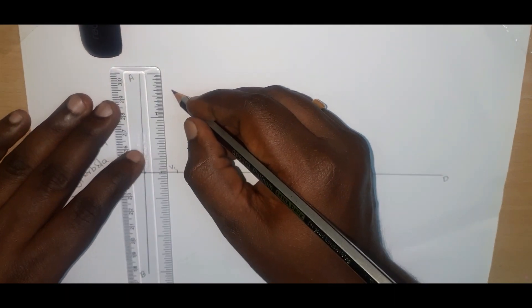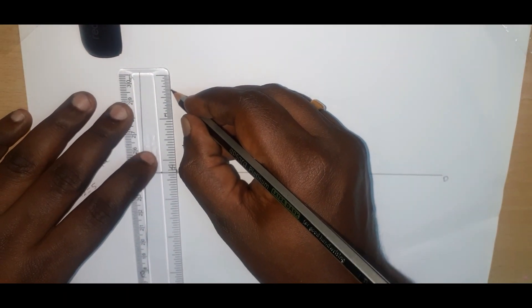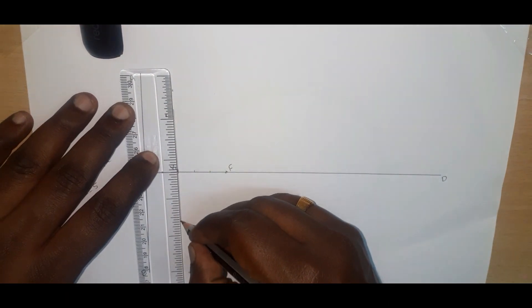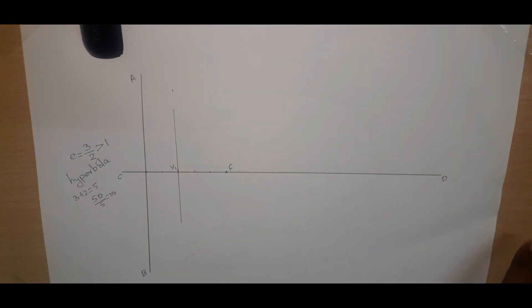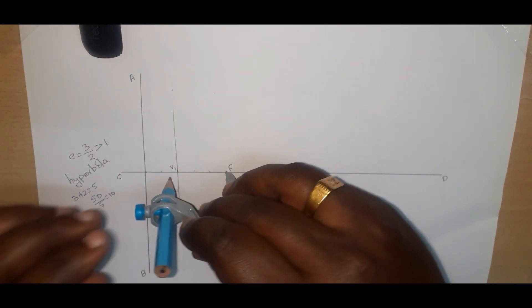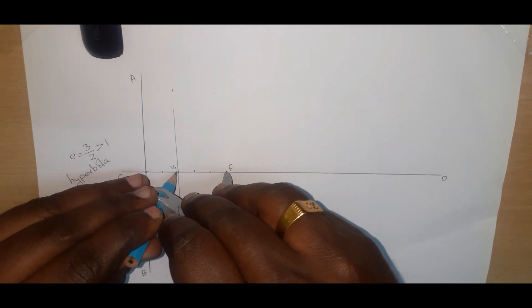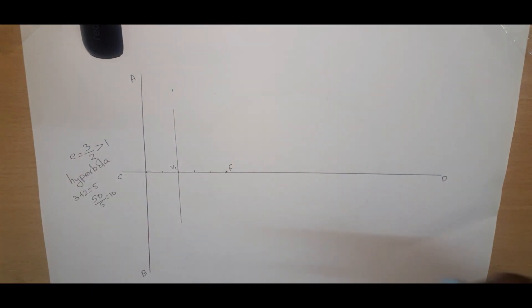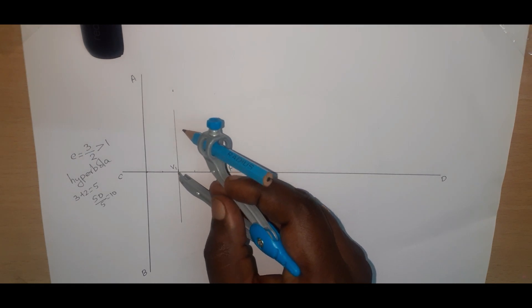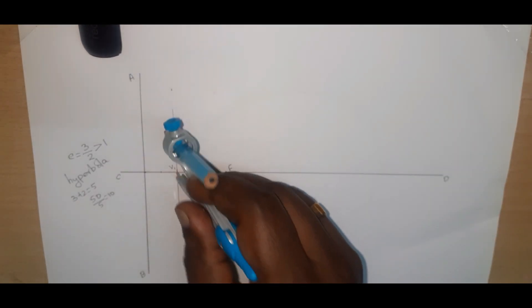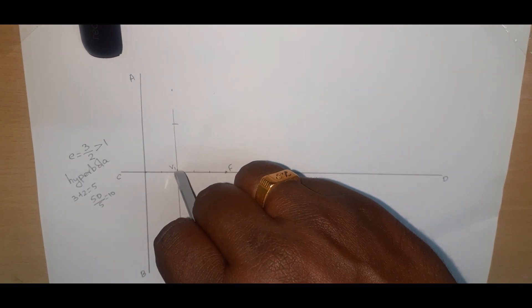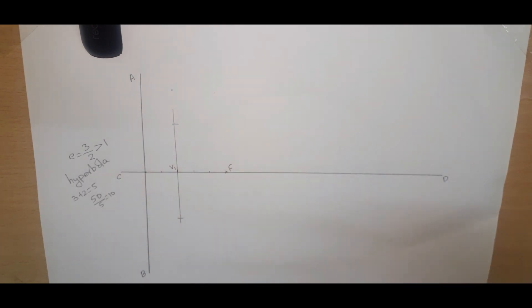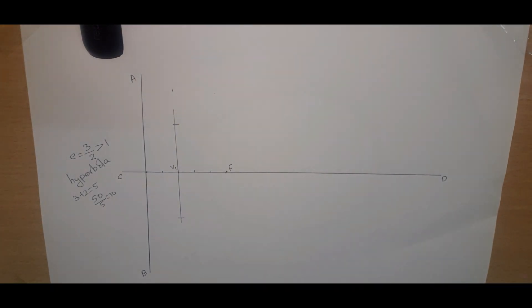Now we draw the line. Take the compass and measure this value. Take a mark here, again take a mark here, and take a mark on both sides.